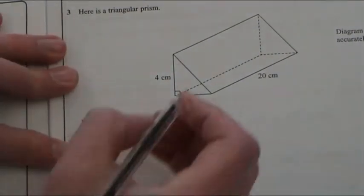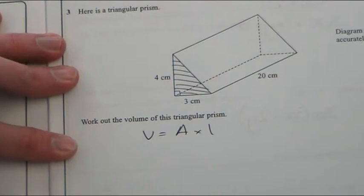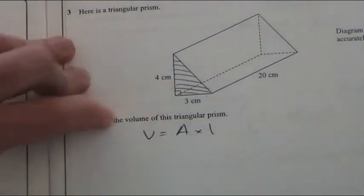Now, if you look at the shape, we're told it's a triangular prism, which means the triangle is the cross section. So, we just have to work out this.